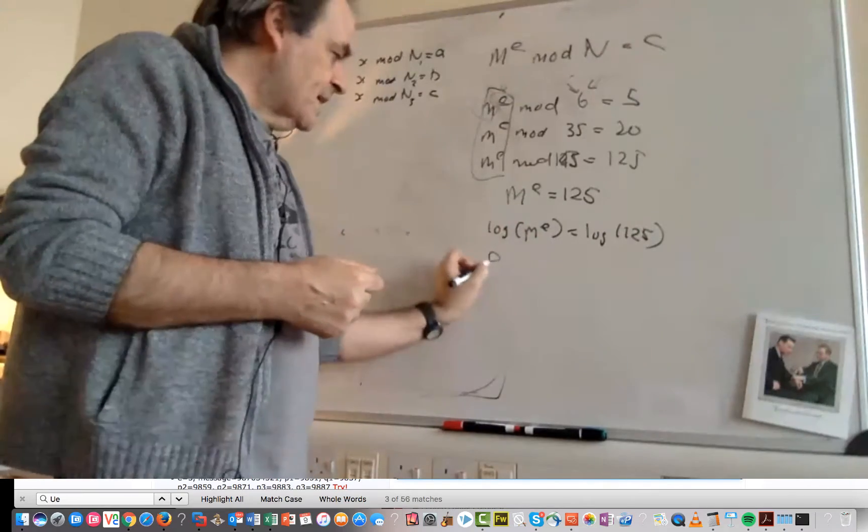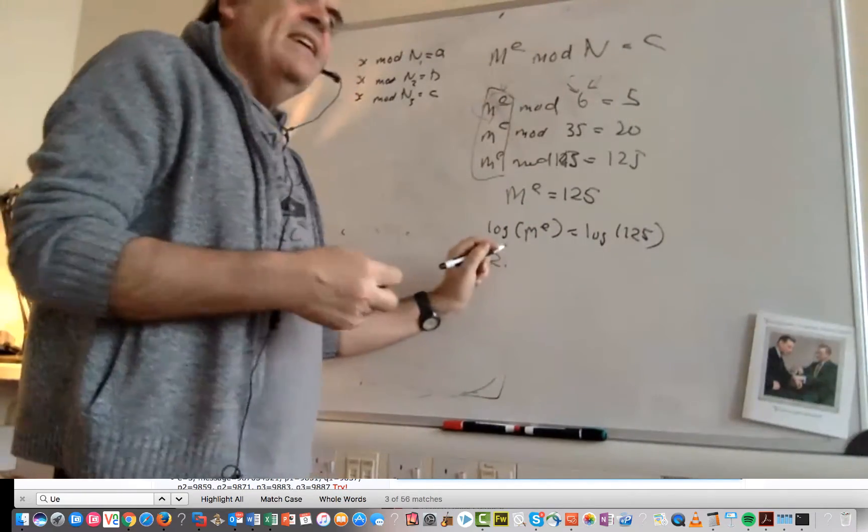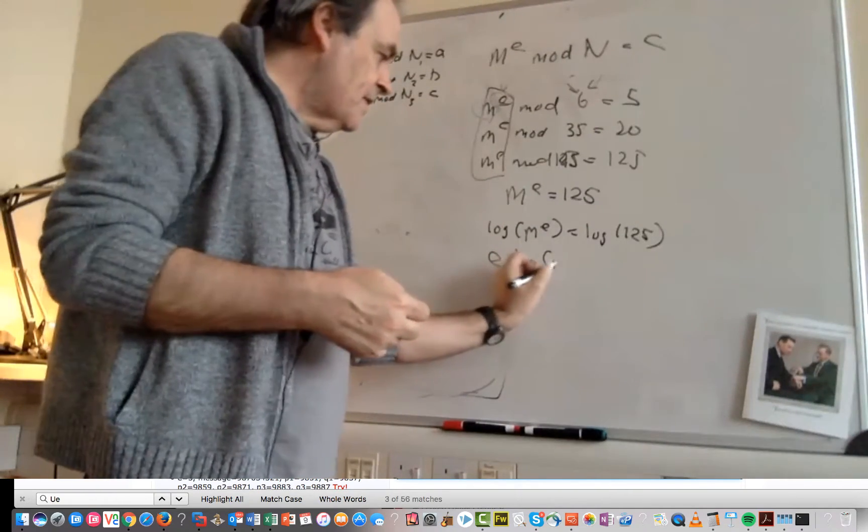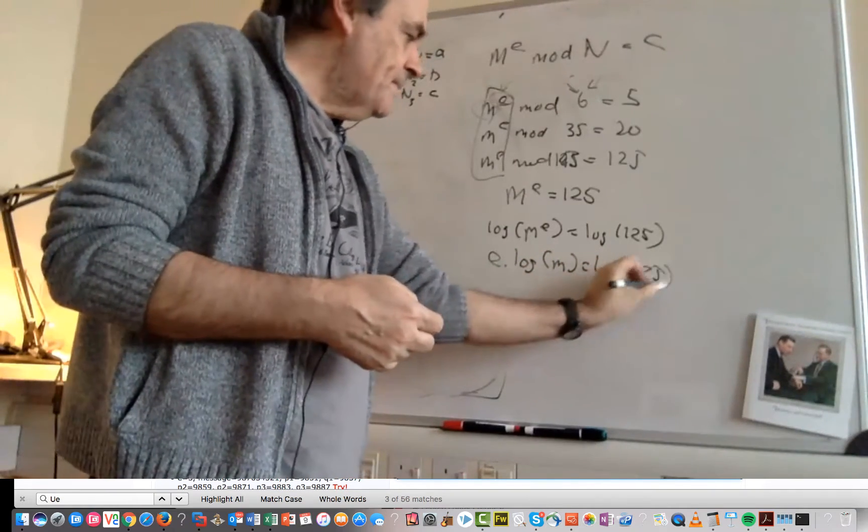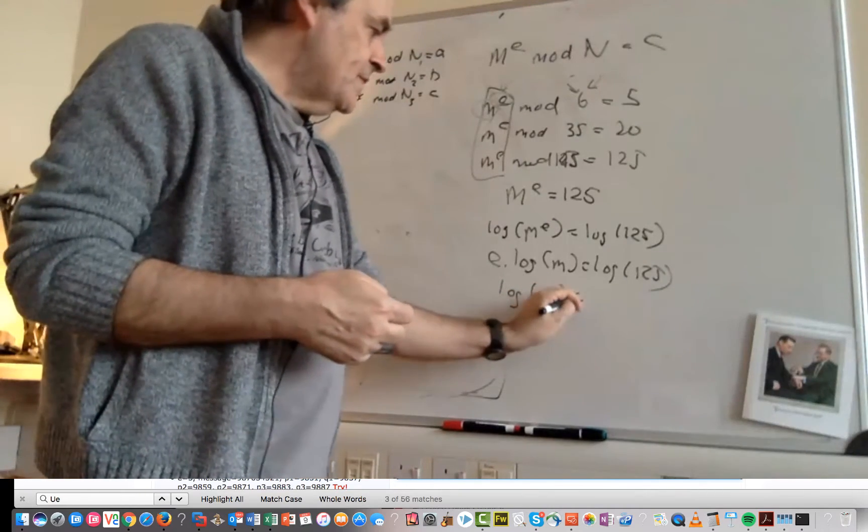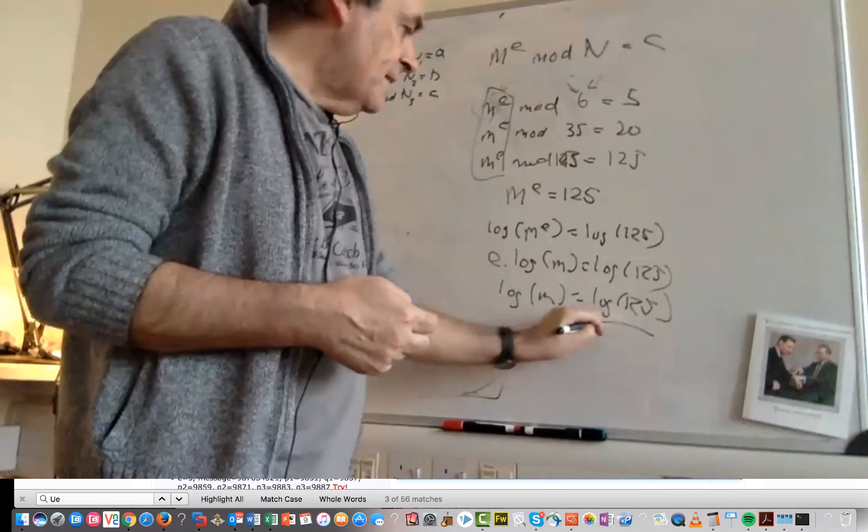The way logs work, as we're in John Napier's institution here, then that becomes E times the log of M is equal to the log of 125. Then the log of M is equal to the log of 125 divided by E.